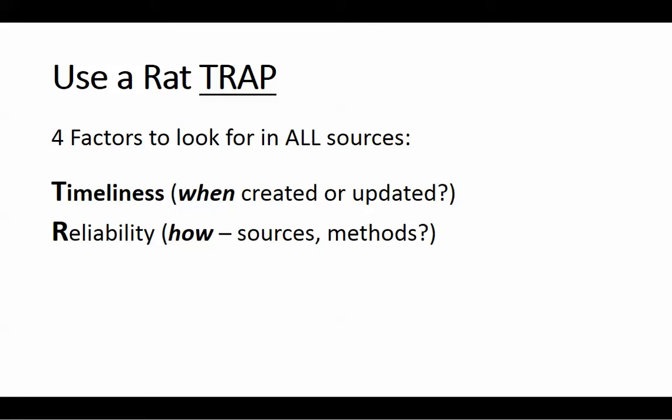The third factor in our TRAP is authority. Who is creating, writing, or presenting this information? What are their credentials? Are they an expert in the field they're writing or talking about? Often this involves simply Googling someone's name, since their credentials and background may not always be apparent. Sometimes you need to take that extra step, and in a minute we'll show ways you can do this.